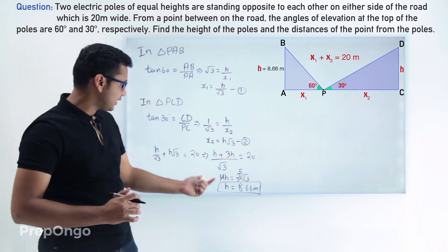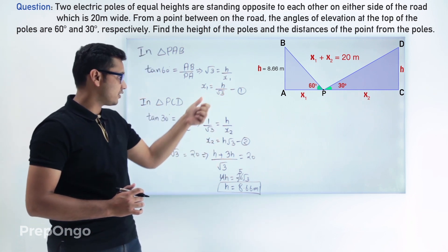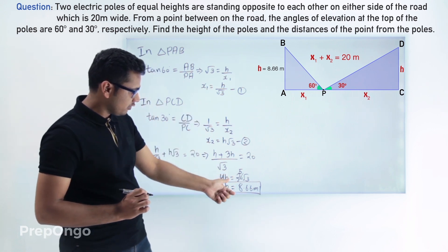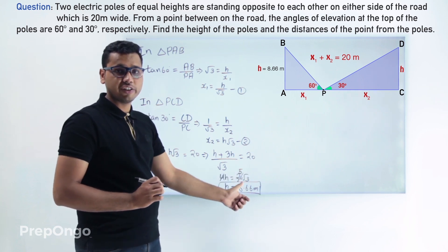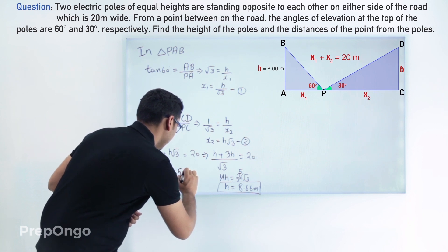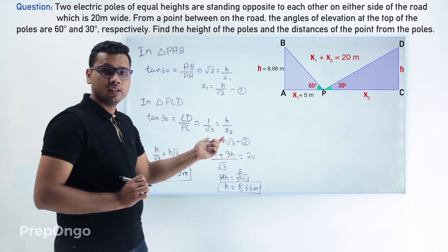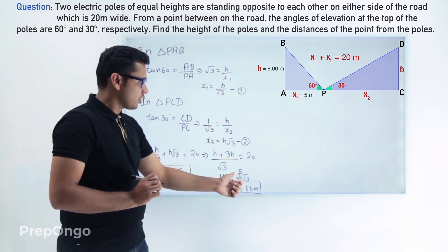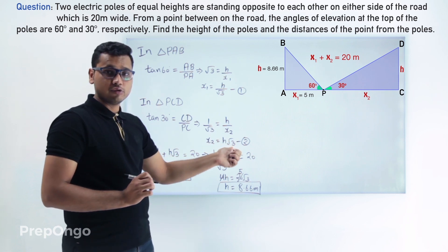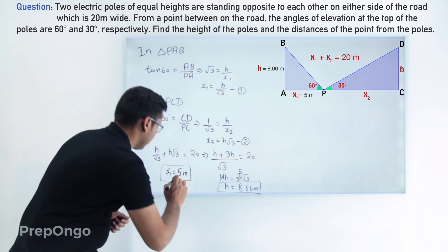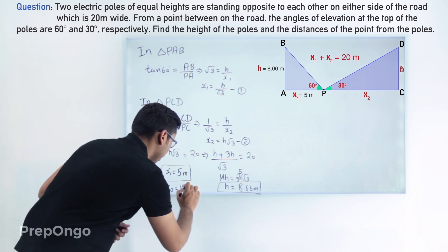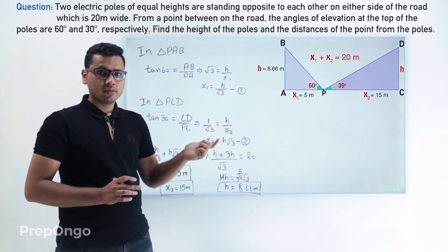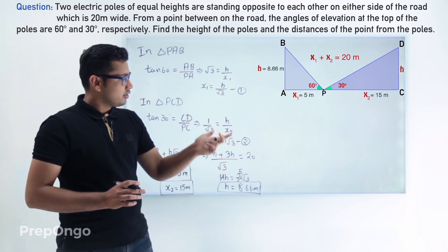Now we put the value of H into equations 1 and 2 to find x1 and x2. For x1: x1 equals H over root 3. The value of H is 5 root 3, so root 3 cancels, and x1 comes out to be 5 meters. For x2: x2 equals H root 3, and H is 5 root 3, so x2 equals 5 root 3 times root 3, which gives x2 equal to 15 meters.